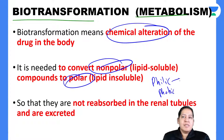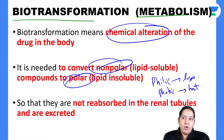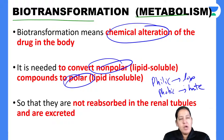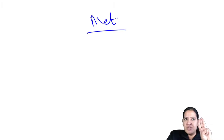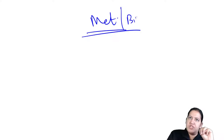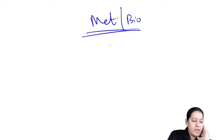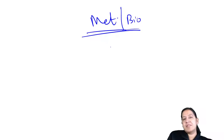Liver is the main organ of metabolism but it is not always 100% liver. There are exceptions where metabolism does not take place in the liver but somewhere else — known as extra-hepatic metabolism. You should know these exceptions along with the organ of metabolism for each drug.